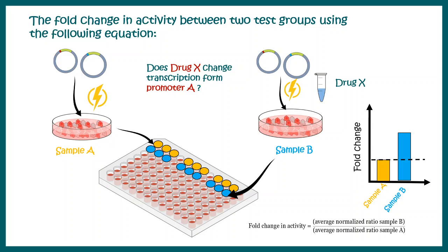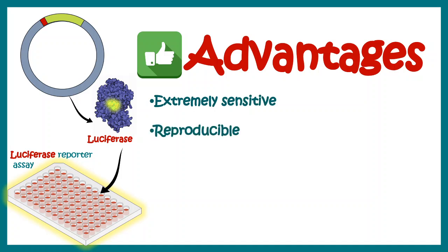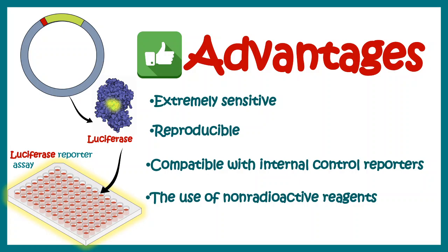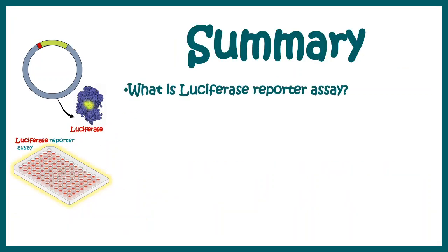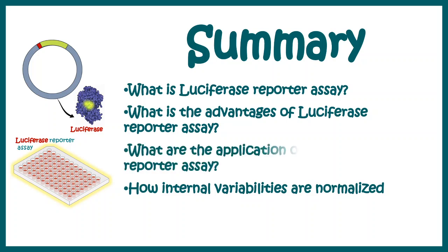These kinds of conclusions can be drawn using reporter assays. The overall advantages are: it is extremely sensitive, reproducible, and compatible with internal controls and reporters, so variability is taken care of. It is highly sensitive and reproducible. Lastly, this assay does not use any radioactive substances, so it is hazard-free. In summary, we have learned what a reporter assay is, how reporter assay is advantageous, what are the applications of this assay, and what variables can affect our results and how to overcome them.